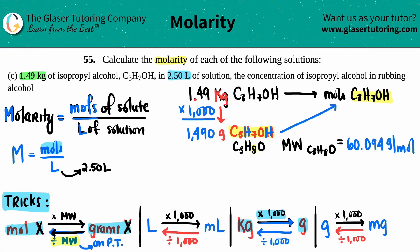I'm just going to take those grams, divide it by that molecular weight, and I got the moles. So we have 1,490 grams divided by the molecular weight 60.094 grams per mole. As you can see, the unit of grams cancel out and I'm left with the mole. So 1,490 divided by 60.094, I get, we need three sig figs, 24.8 moles of the isopropyl alcohol.